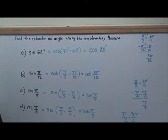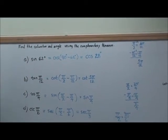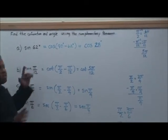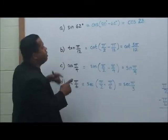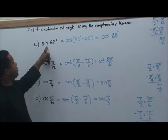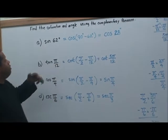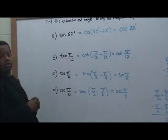What we want to do here is find the co-function and angles using the complementary angle theorem. Now look at this problem here, sine of 62 degrees. We're going to use this conversion from the chart that will be cosine 90 minus this angle here, which will be cosine 28. So this is not only the co-function of each other, but it's also the complementary angle of each other as well.